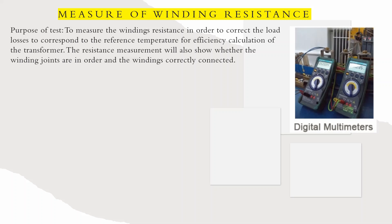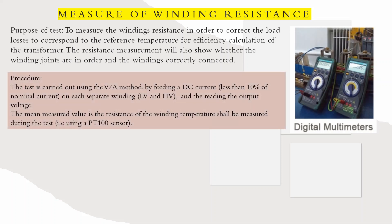There are a lot of digital meters and multimeters available. The purpose of this test is to measure the winding resistance in order to correct the load losses, corresponding to the reference temperature for efficiency calculations of the transformer. The procedure is carried out using the volt-ampere method by feeding DC current less than 10% of nominal current on each separate winding.